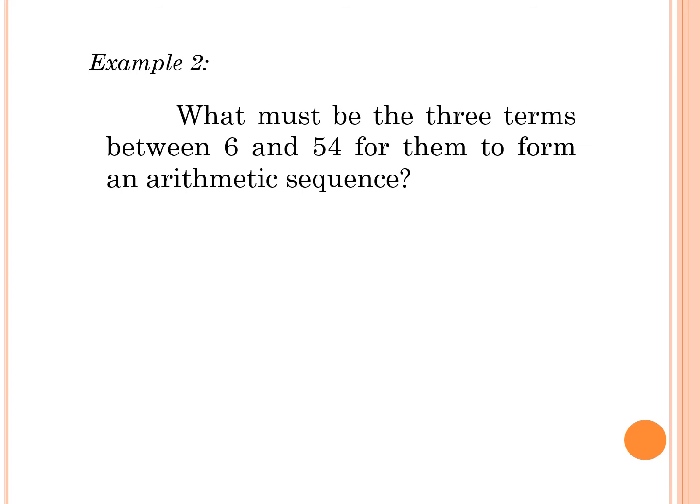Let's try to imagine the problem. We have 6 on the first term, 54 on the last term. So solution: on our imagination, we are going to have the blanks. So 6 for the first term, how many blanks must be inserted? 1, 2, 3 terms—arithmetic means—and then the last term is 54. So how many terms we have on this sequence? We have 5 terms on the sequence.